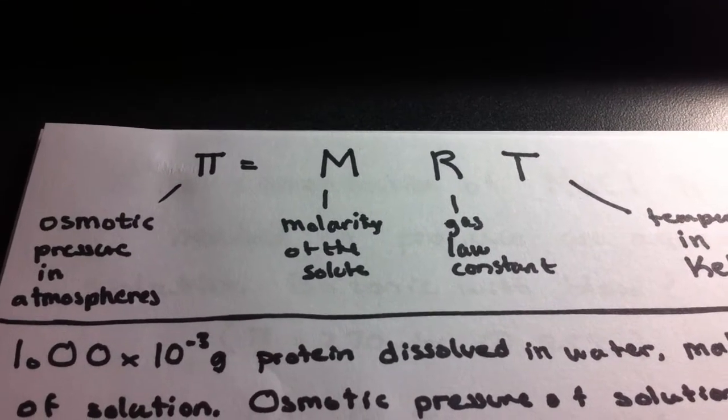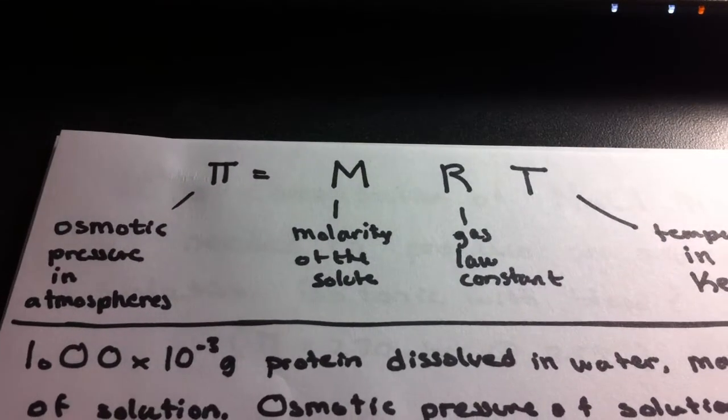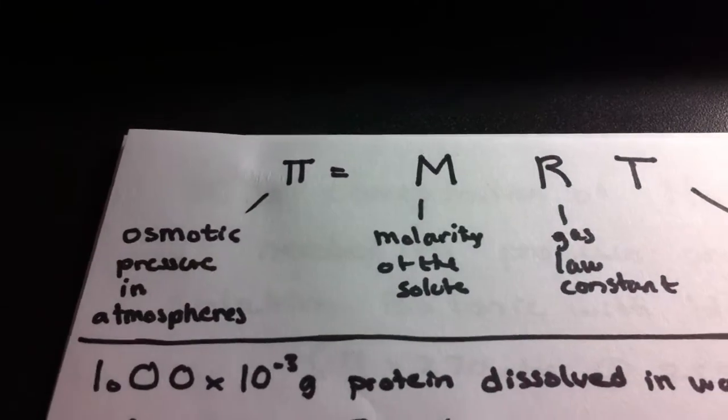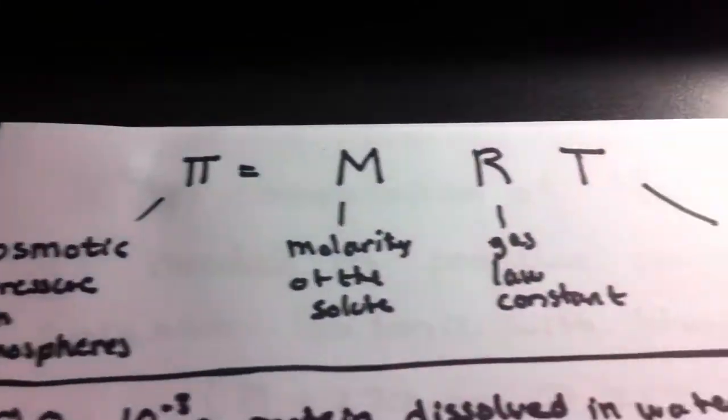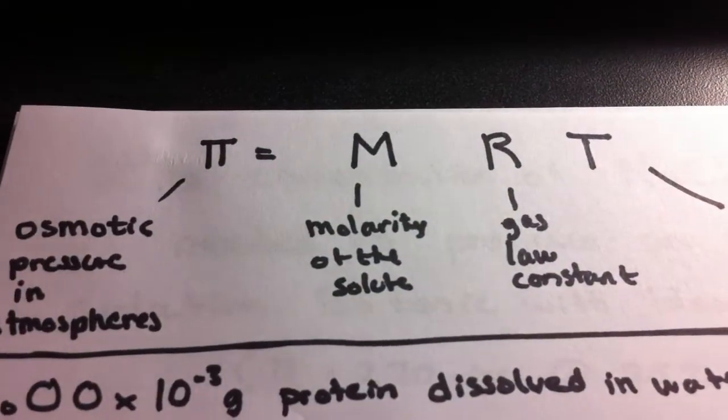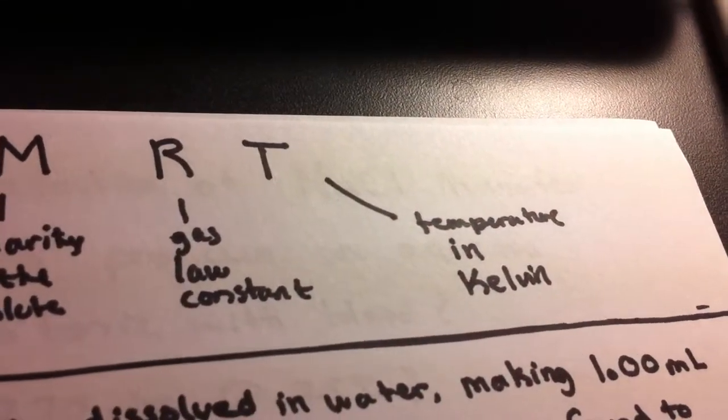Osmotic pressure is a colligative property, which means it depends only on the number, not the identity, of the solute particles in an ideal solution. It can be represented by this equation: π equals mRT, where π equals the osmotic pressure in atmospheres, m equals the molarity of the solute, R equals the gas law constant, and T equals the temperature in Kelvin.